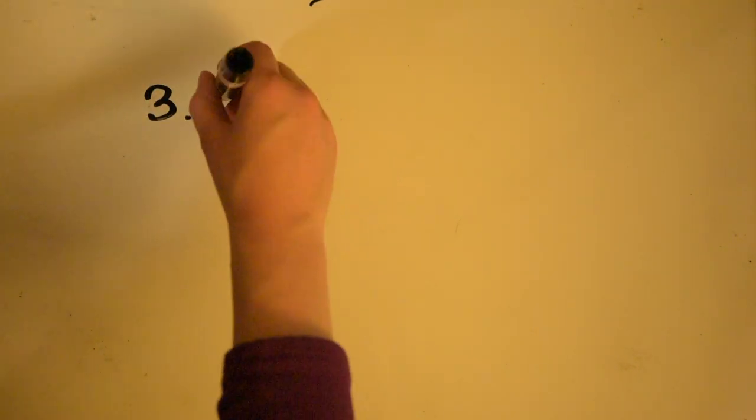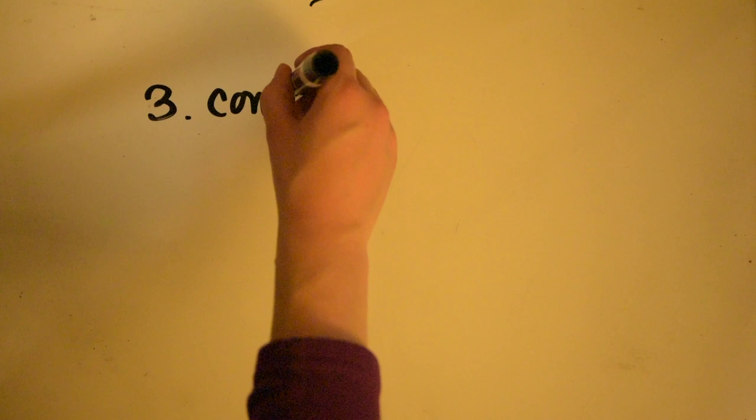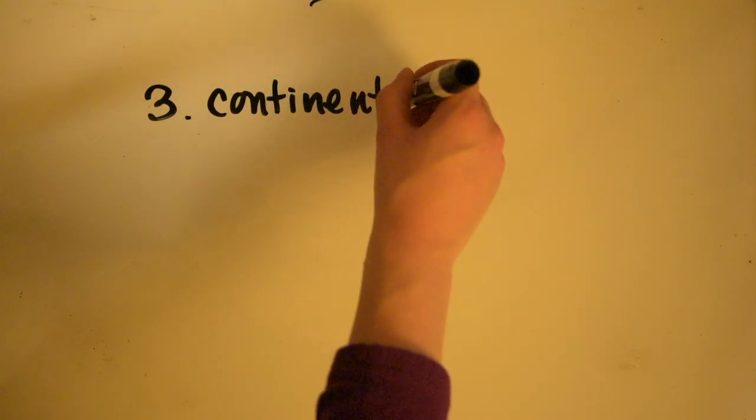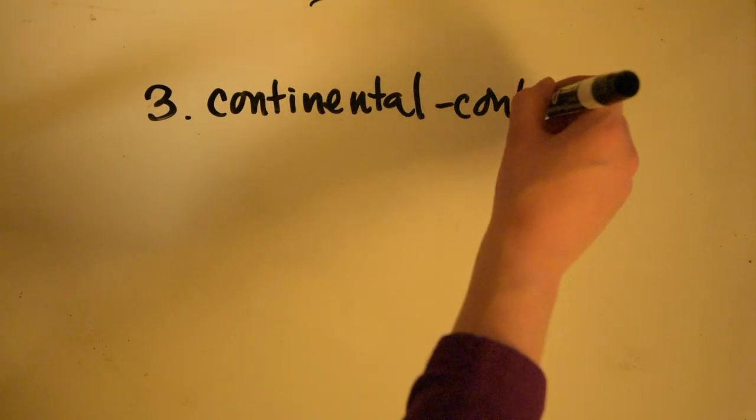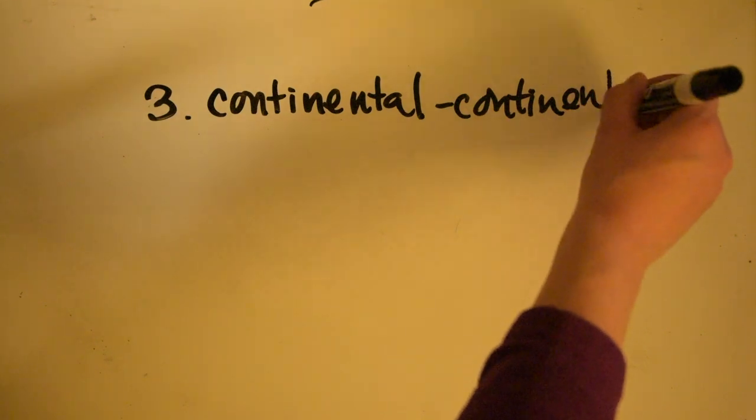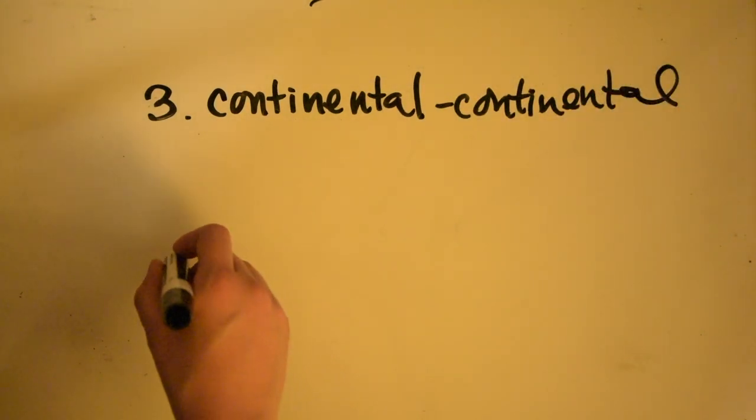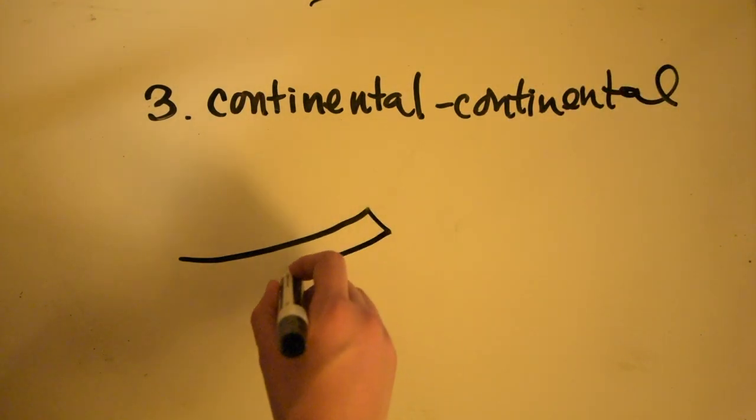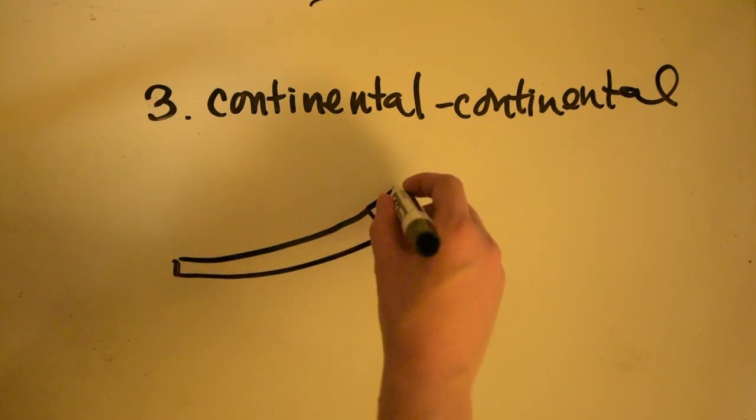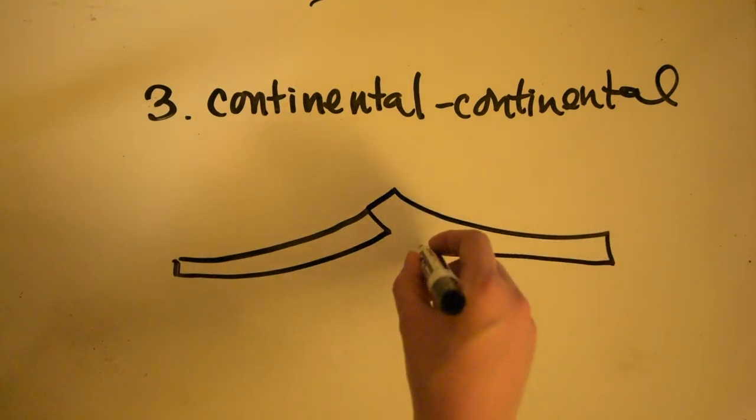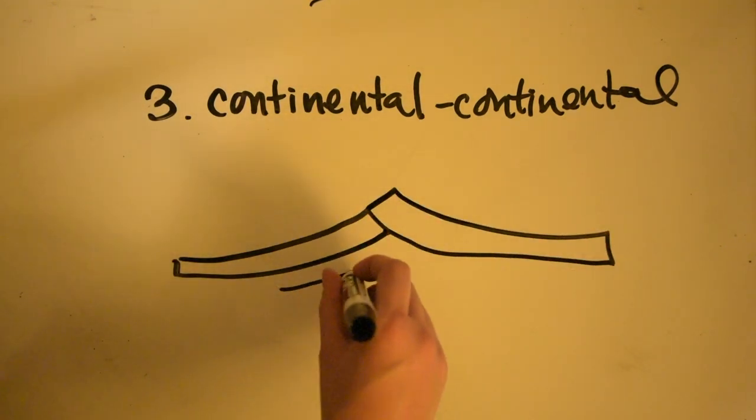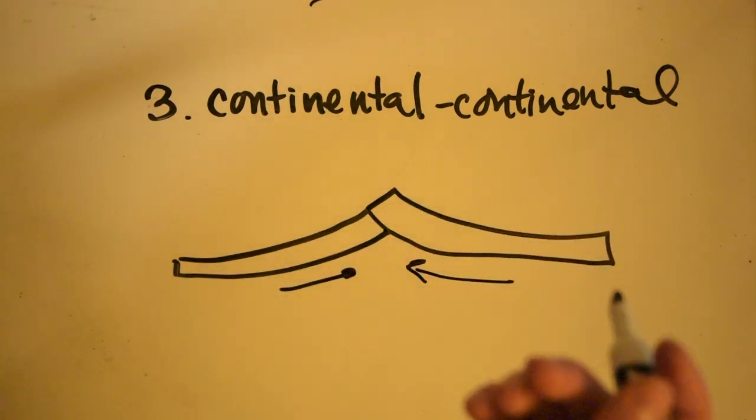The third example of the convergent boundaries is the continental-continental. This is when two plates come together and they crash into each other and form mountain ranges.